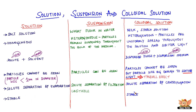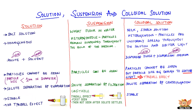The scattering of a beam of light is called the Tyndall effect. The path of light becomes visible when it passes through a colloidal solution. This effect is important because it differentiates a solution from a colloidal solution. A Tyndall effect is not observed in solutions. In the case of suspensions, the Tyndall effect is observed for some time, but once the solute particles settle down, the Tyndall effect cannot be observed. However, the Tyndall effect is always observed in colloidal solutions.